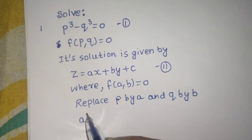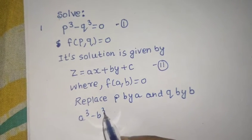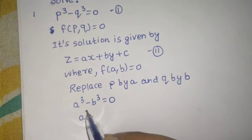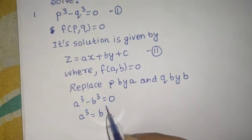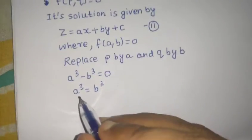You will get A³ - B³ = 0 or A³ = B³. You can directly write from here A = B.